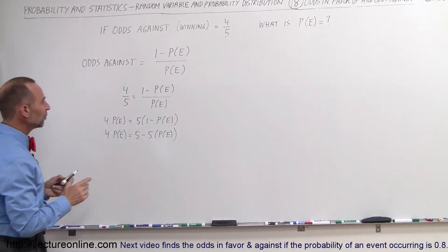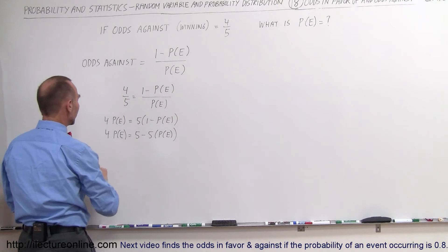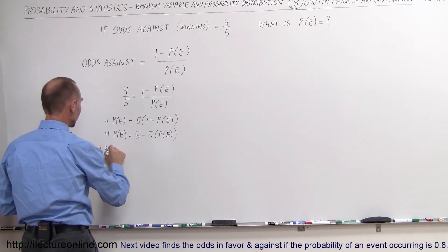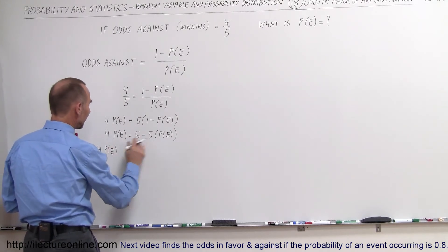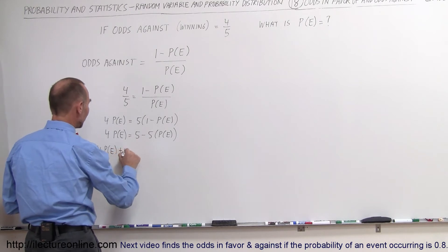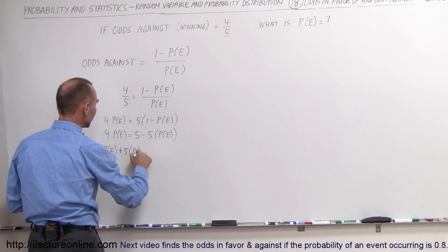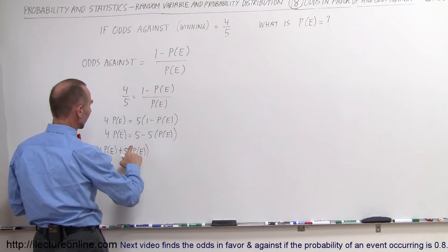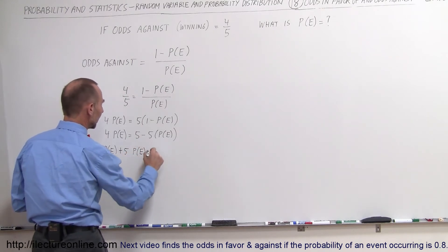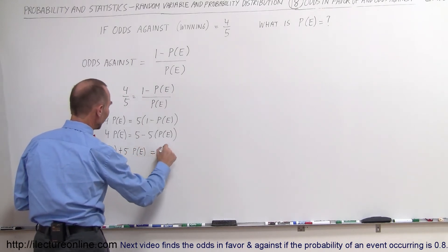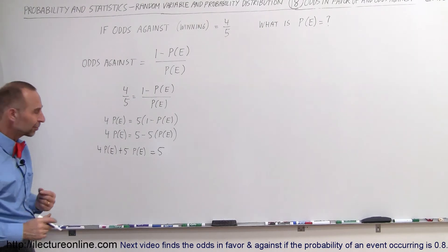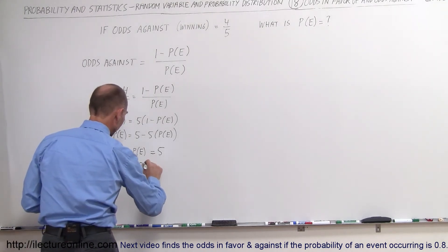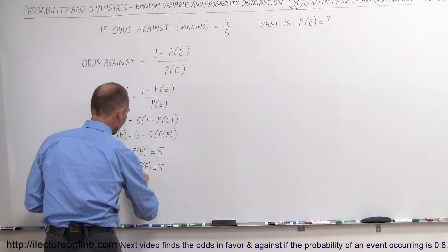Now we move the 5P(E) term to the other side. So we have 4 times the probability of the event occurring plus 5 times the probability of the event occurring equals 5. Now we combine like terms: 9 times the probability of the event occurring equals 5.